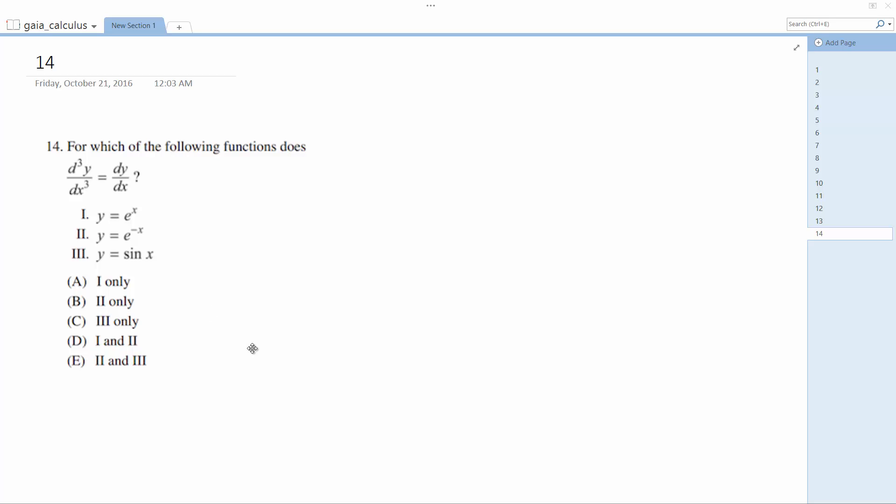Alright, so we want to find the derivative of this. So the first derivative, dy/dx of e to the x is going to be equal to just e to the x, because you pull down x, it becomes 1.